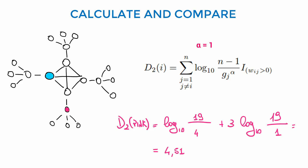The pink node is connected to one node in the network core and to three peripheral nodes, so if we calculate D2, we have a contribution equal to the logarithm of 19 over 4, given by the node in the core.